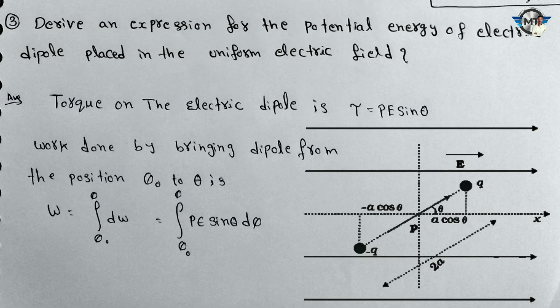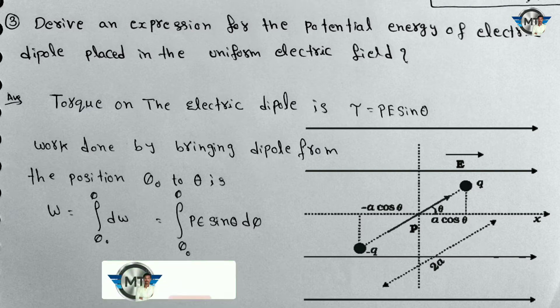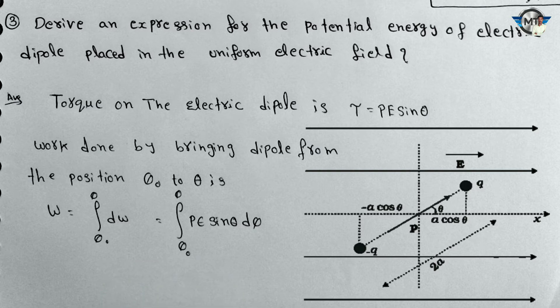Third question: Derive an expression for the potential energy of an electric dipole placed in a uniform electric field. A similar type of question appeared in the previous lesson on electric charges and fields. Here is the potential energy, and here is the electric dipole and its potential energy.